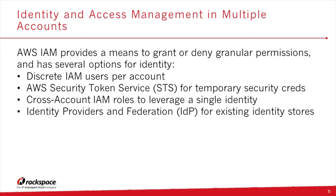The AWS Security Token Service, or STS, provides trusted users with temporary security credentials that can then have policies and access assigned to your AWS resources. It works similarly to long-term access key credentials issued to IAM users, but temporary credentials are short-term — lasting from a few minutes to an hour — and are not stored with the user but created dynamically at runtime when requested.